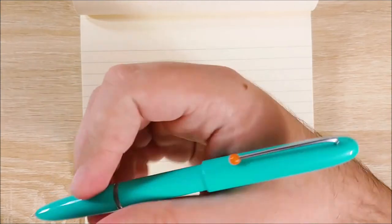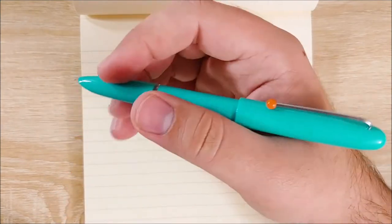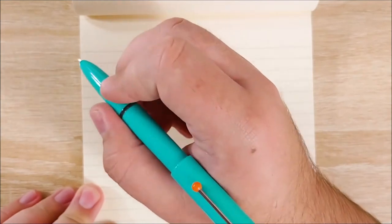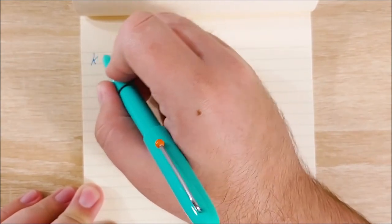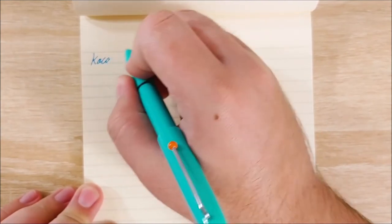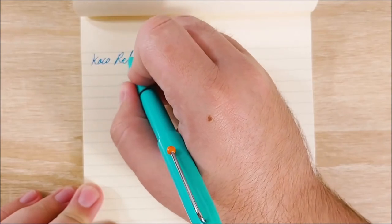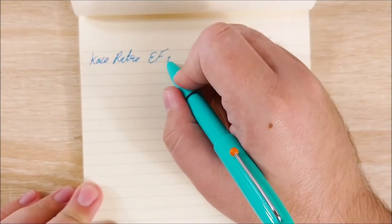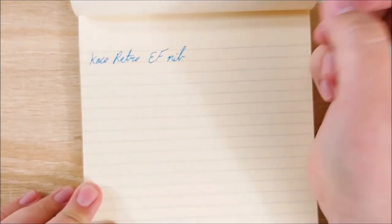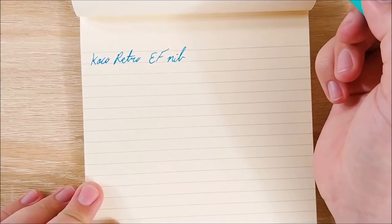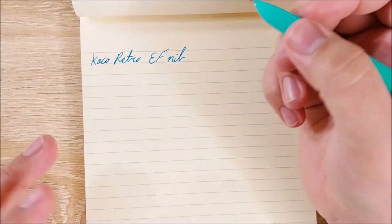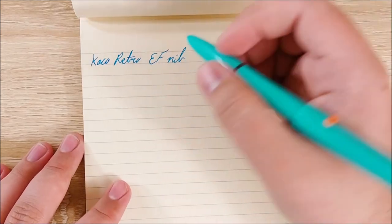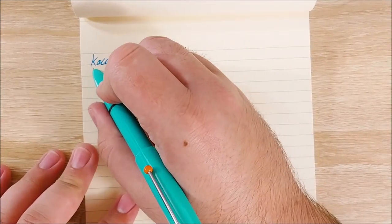All right, on to the writing sample. So in here we have Pilot Iroshizuku Ama-Iro. It's a lot more blue than this pen is, but it's reliable ink and I like using it quite a bit. So we have the Kako Retro. This is again an extra fine nib. Although as I said, it writes a lot more like a western fine to me. Between the flow and the width, you're not really going to get an extra fine line out of this. So keep that in mind if that bothers you at all.